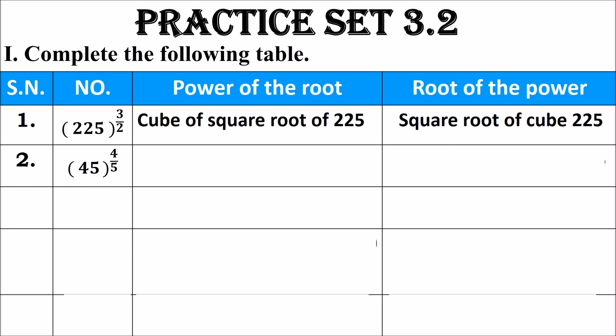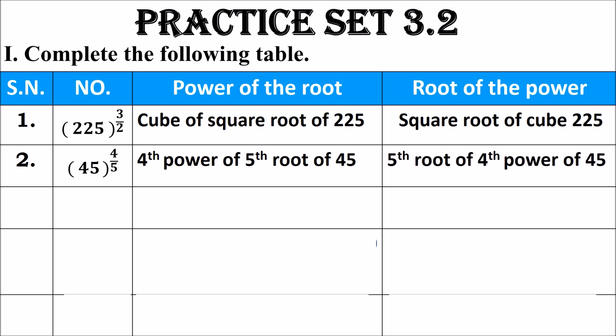Question 2: 45 raised to 4 upon 5. The numerator is 4 — fourth power; the denominator is 5 — fifth root. So it is the fourth power of the fifth root of 45, which can also be written as the fifth root of the fourth power of 45. Question 3: 81 raised to 6 upon 7. The power is sixth and the root is seventh, so it is the sixth power of the seventh root of 81, which can also be written as the seventh root of the sixth power of 81.